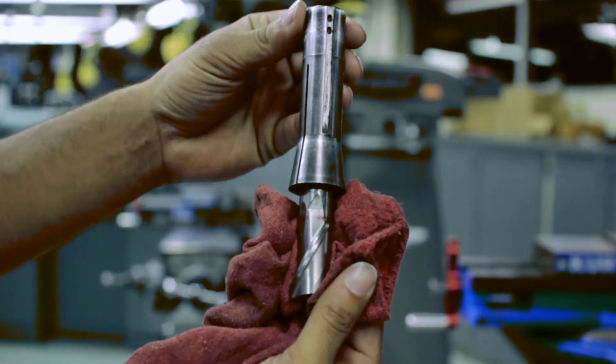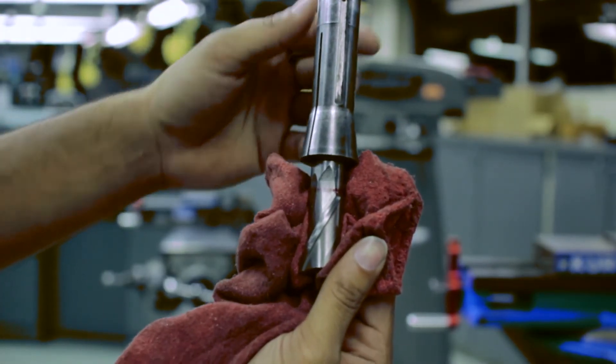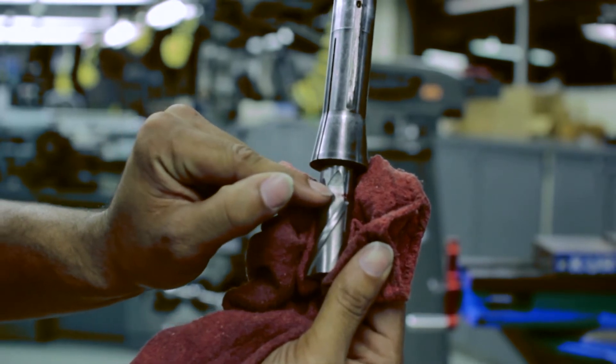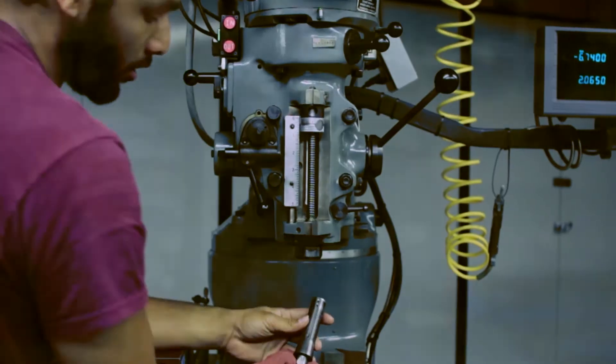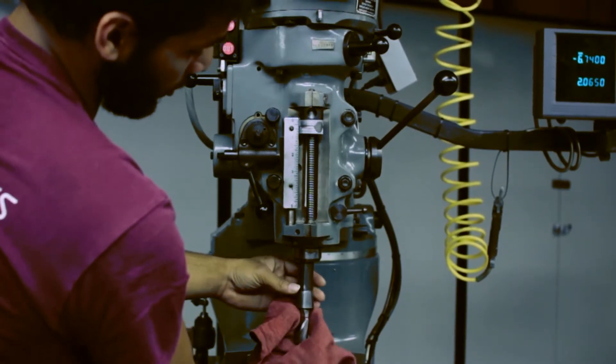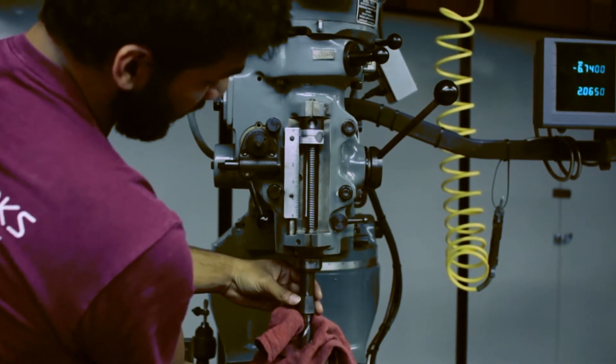This is our collet and tool assembly. When inserting this into the machine, make sure there's about an eighth of an inch gap between the beginning of the flute and the collet. Take our assembly and insert it into the spindle. Make sure it is fully seated by rotating it.